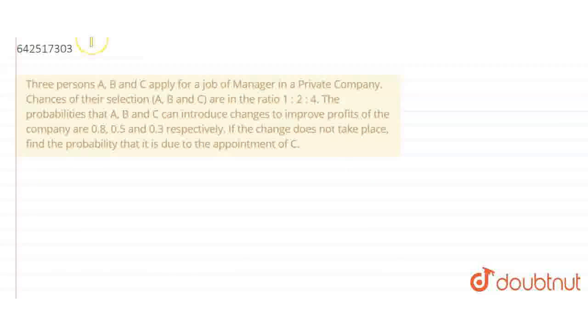Hello, the question states that 3 persons A, B and C apply for a job of manager in a private company. Chances of their selection A, B and C are in ratio 1:2:4. The probabilities that A, B and C can introduce changes to improve profit of the company are 0.8, 0.5 and 0.3 respectively.